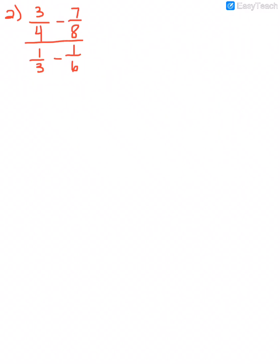In the first two examples, we had a fraction in the numerator and a fraction in the denominator, so all we had to do was divide the numerator by the denominator. Here we have two fractions in the numerator and two fractions in the denominator. So before we can do anything else, we have to get each part of the fraction into a single fraction — all the stuff on top becomes one fraction, all the stuff on the bottom becomes another fraction, and then we can multiply by the reciprocal.